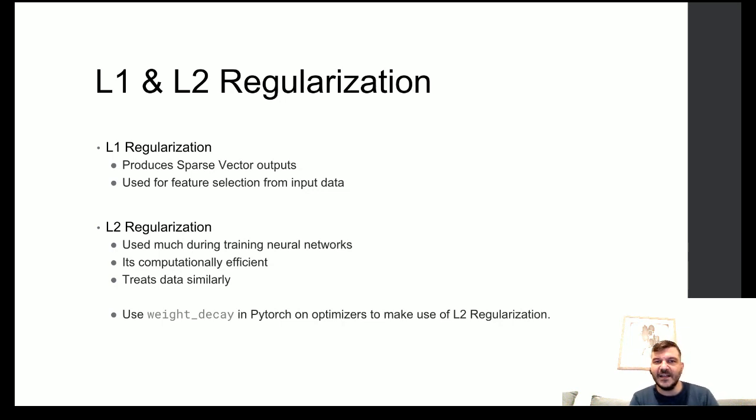L2, on the other hand, is the one you will be mostly using. It is much more computationally efficient, because the squares produce nice derivatives. It will treat all data similarly and will not produce sparse vectors as in the case of L1 regularization. So, expect L2 to keep weights homogeneously small. Now, in PyTorch, you can define the L coefficient of L2 regularization by making use of the weight decay parameter on your optimizer section. And thus, make sure that the resulting weights will be homogeneously smaller.